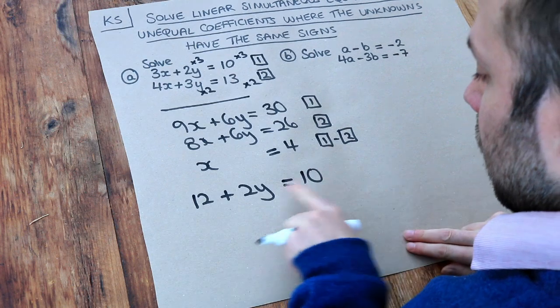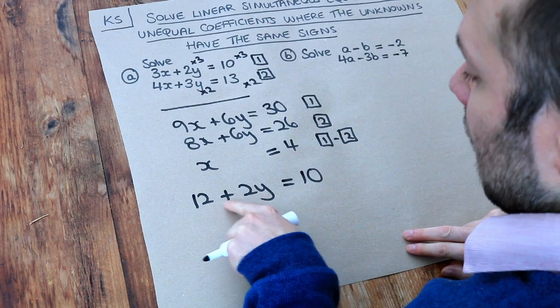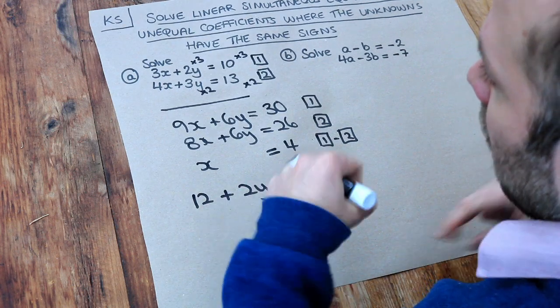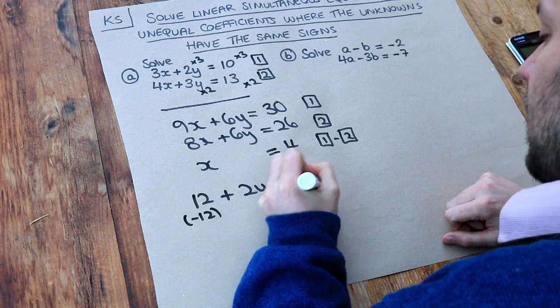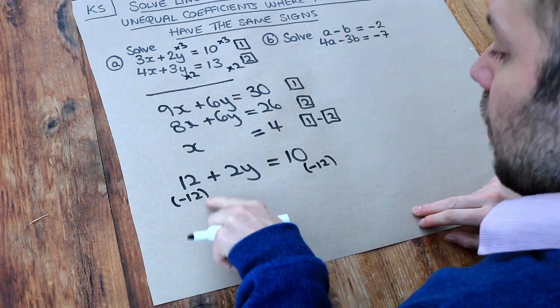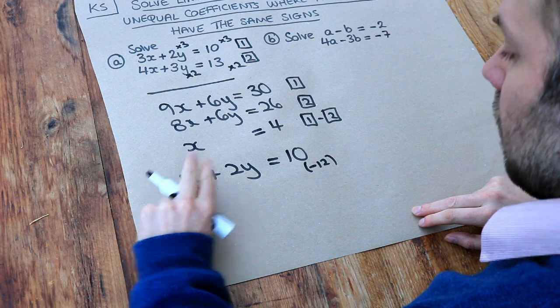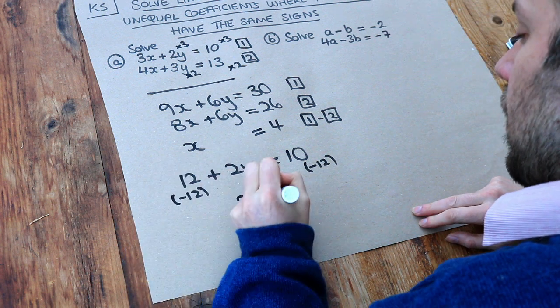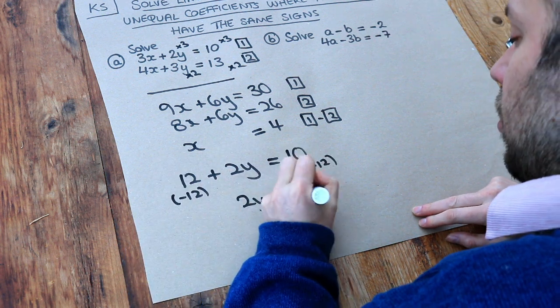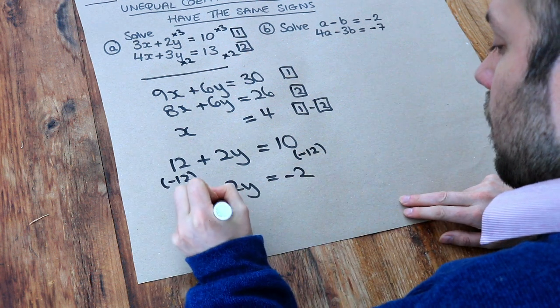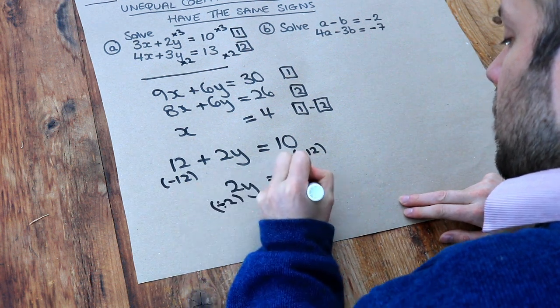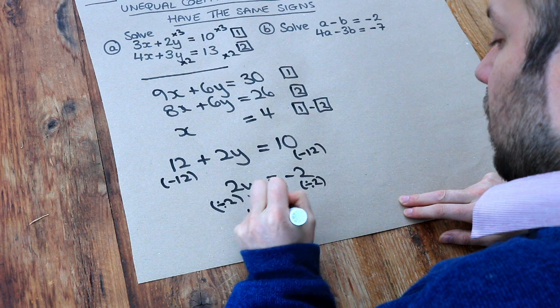And then we just need to solve this equation. So y has been multiplied by 2, then we're adding 12 to it. We want to undo that. Last thing we did, we want to subtract 12 first to get rid of that 12. So subtracting 12 gets rid of that plus 12, we're left with 2y. 10 minus 12 is minus 2. Divide both sides by 2, and that gives you y equals minus 1.